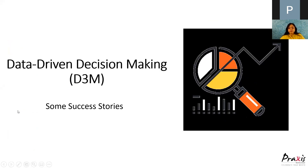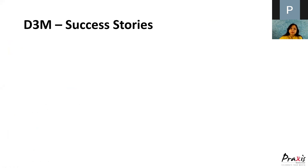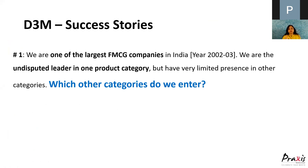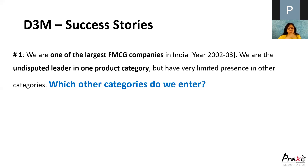Our first topic is data-driven decision making. I'm going to tell you a success story from 2003. It is the story of the largest FMCG company at that time — an undisputed leader of one product category. This is the story of ITC, which everybody knows. In 2002 and 2003, ITC had one sole product, which was cigarette.